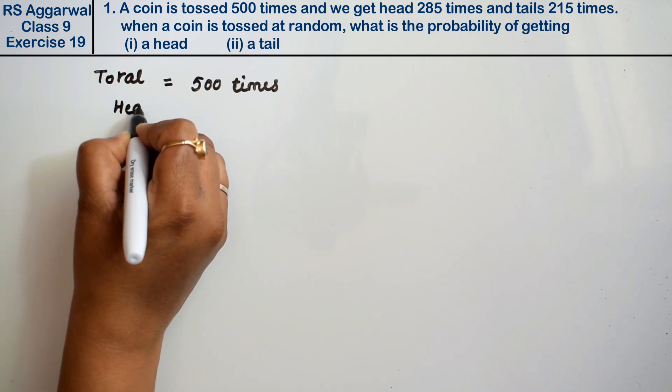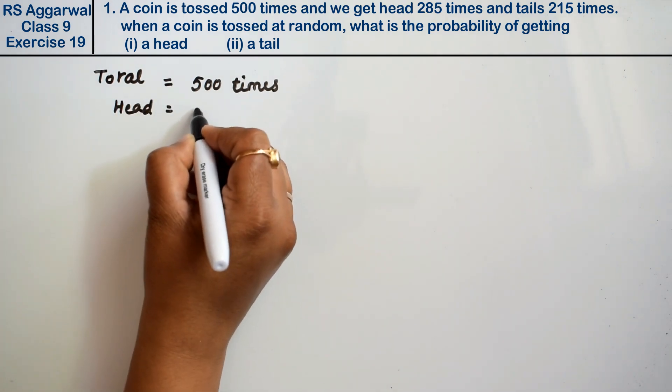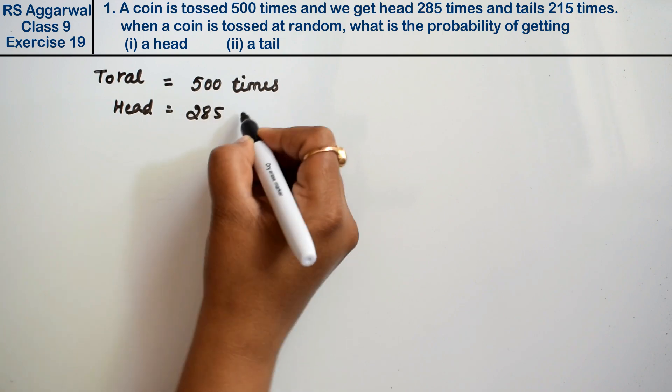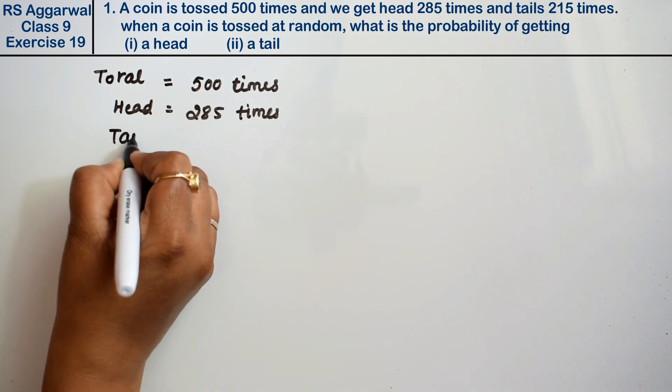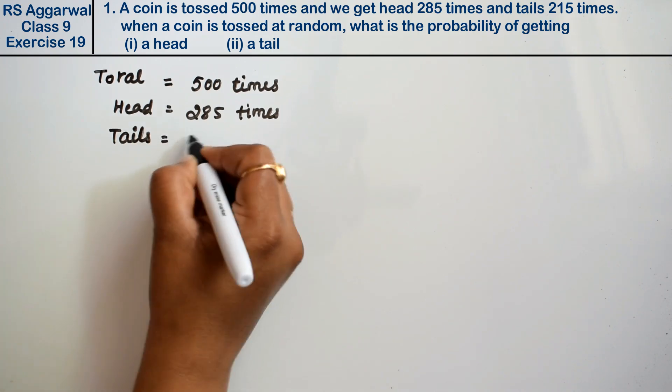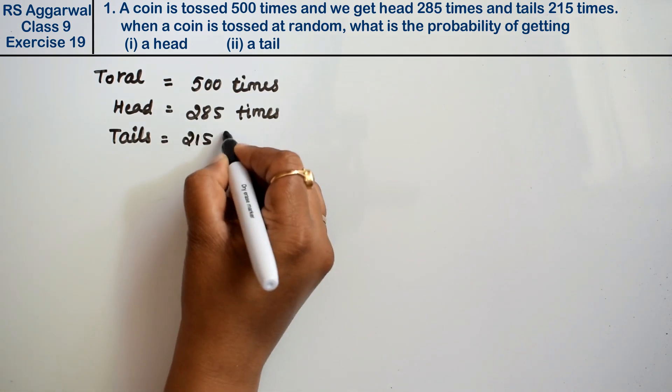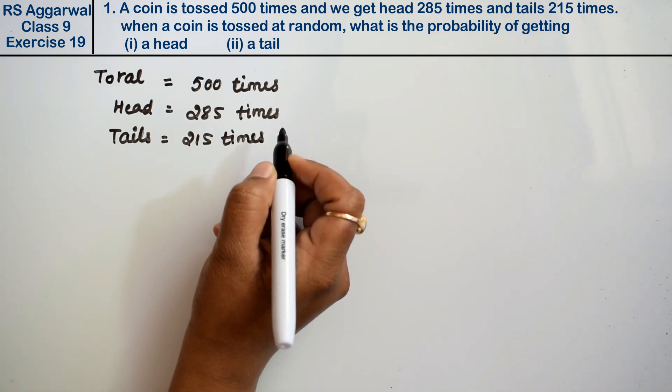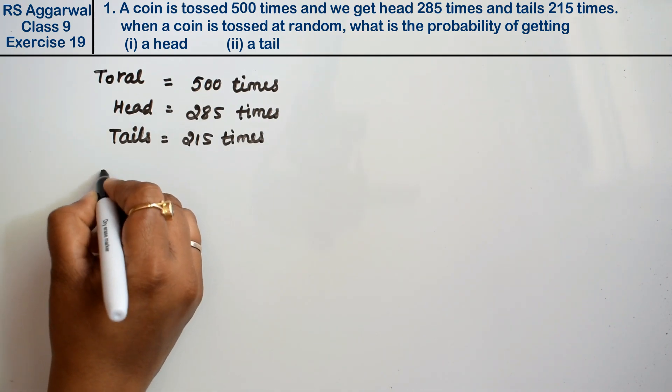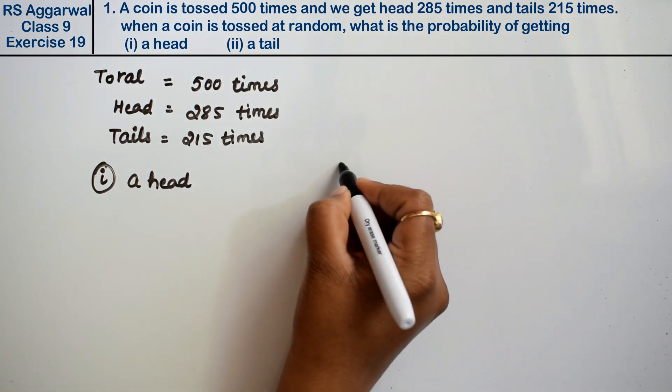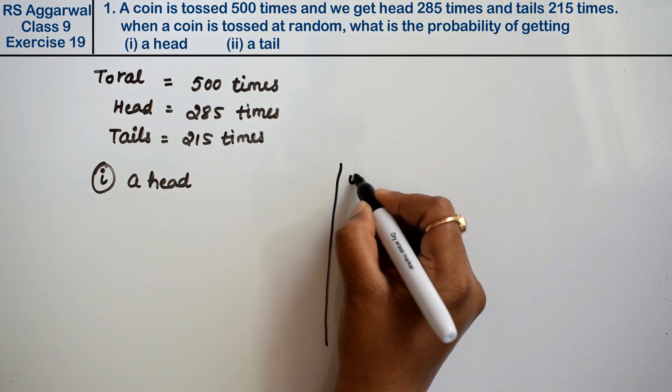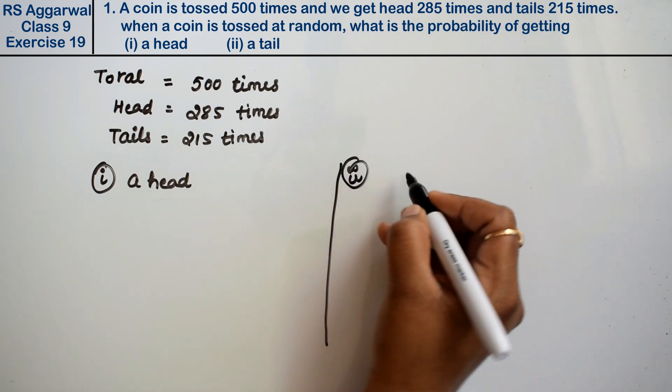Out of these, heads came 285 times and tails came 215 times. When a coin is tossed at random, what is the probability of getting a head and what is the probability of getting a tail?